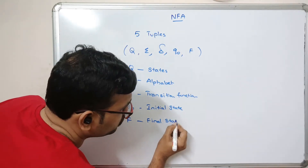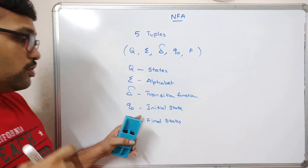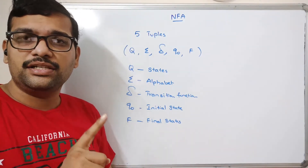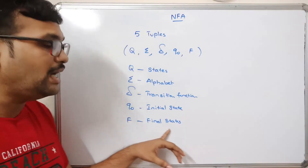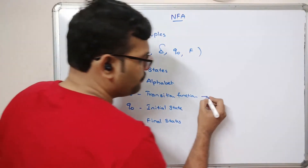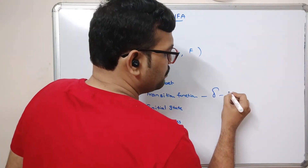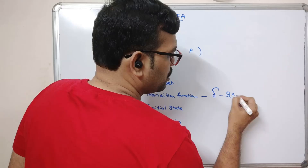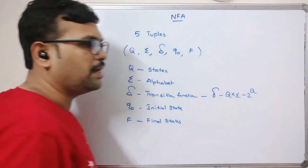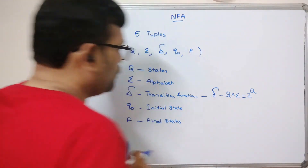Similar to DFA, NFA also has a single initial state and may have multiple final states. One more difference is in the transition function — here we can have 2-power-Q paths, meaning multiple possible transitions.